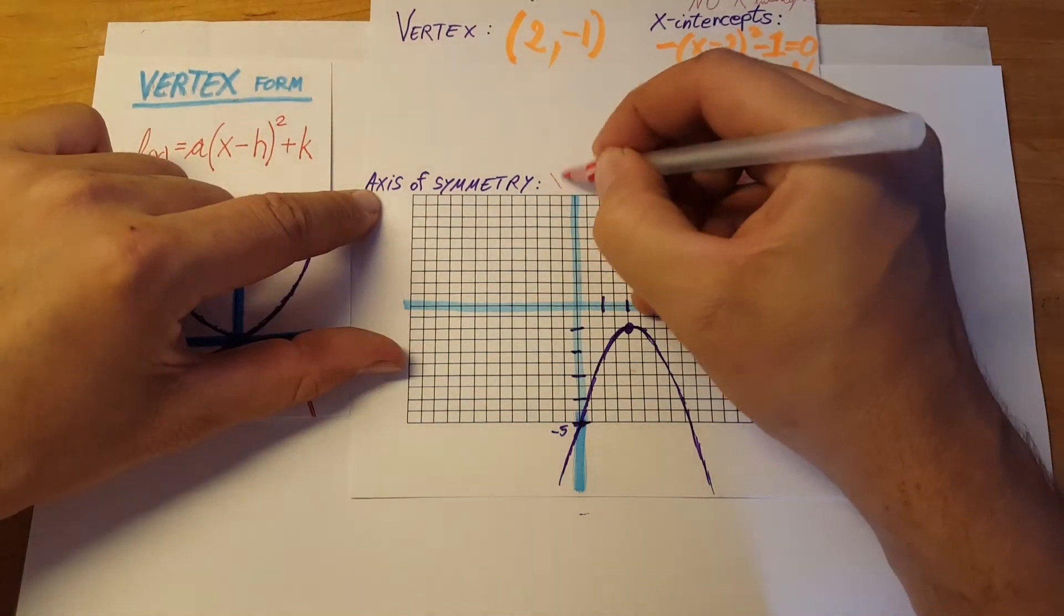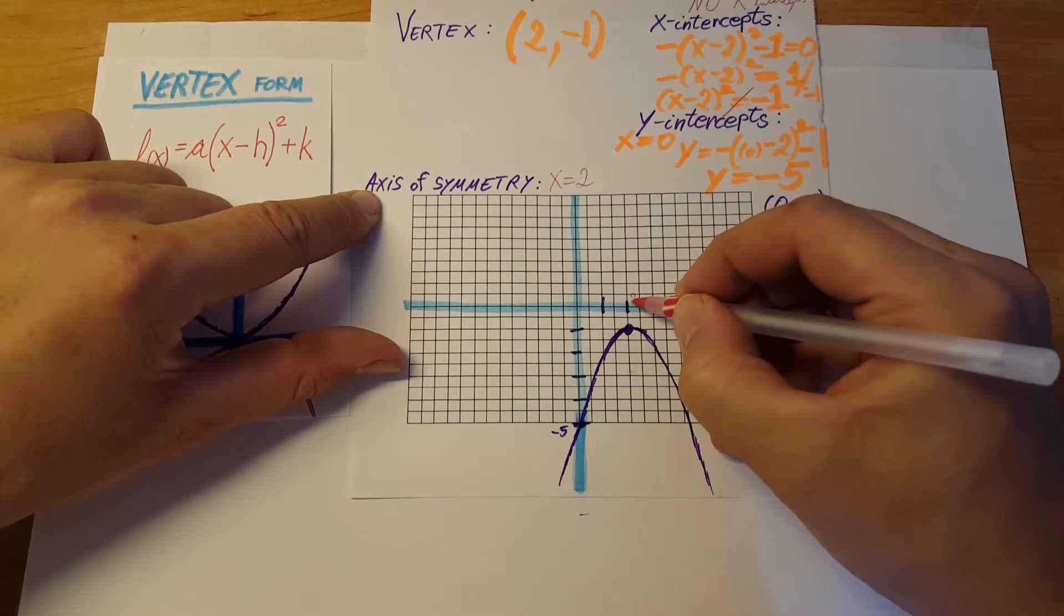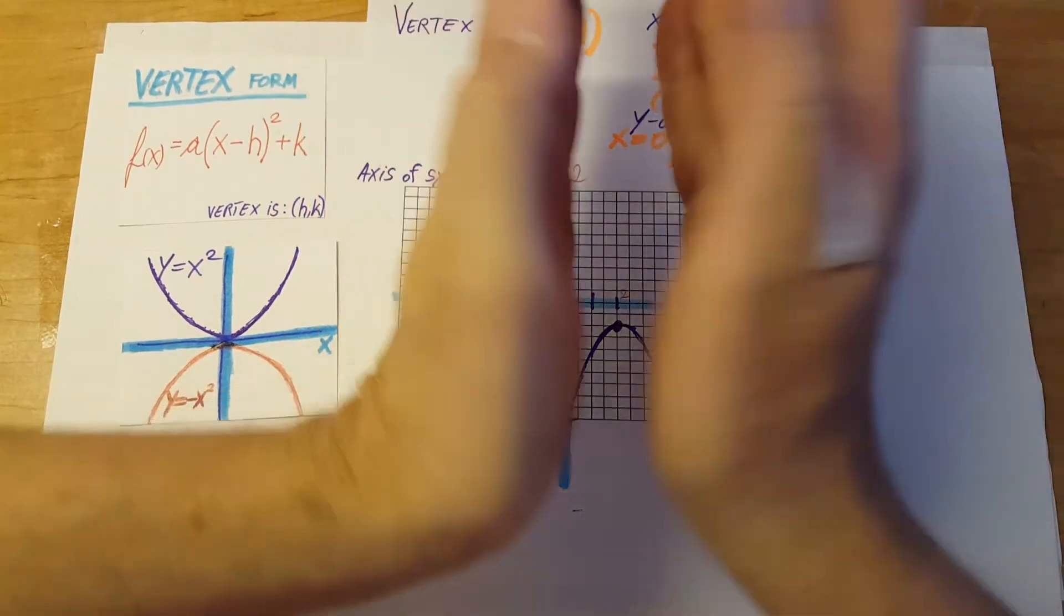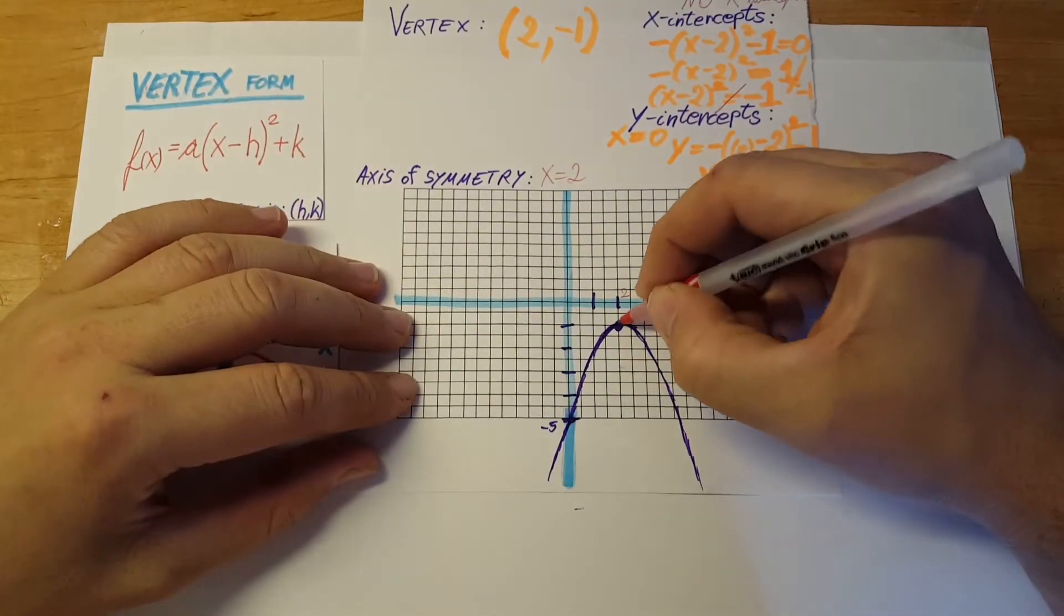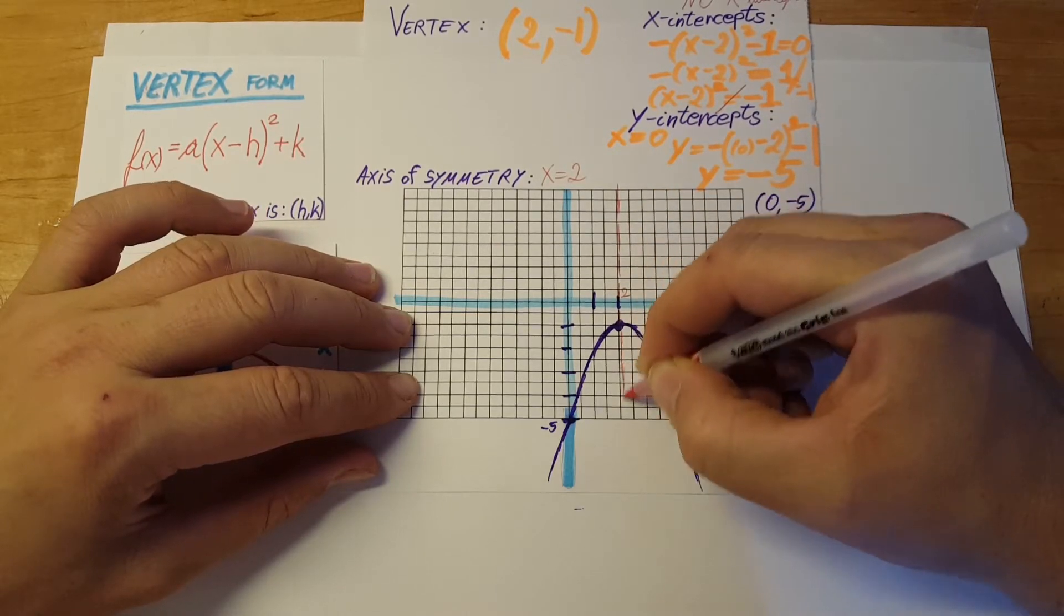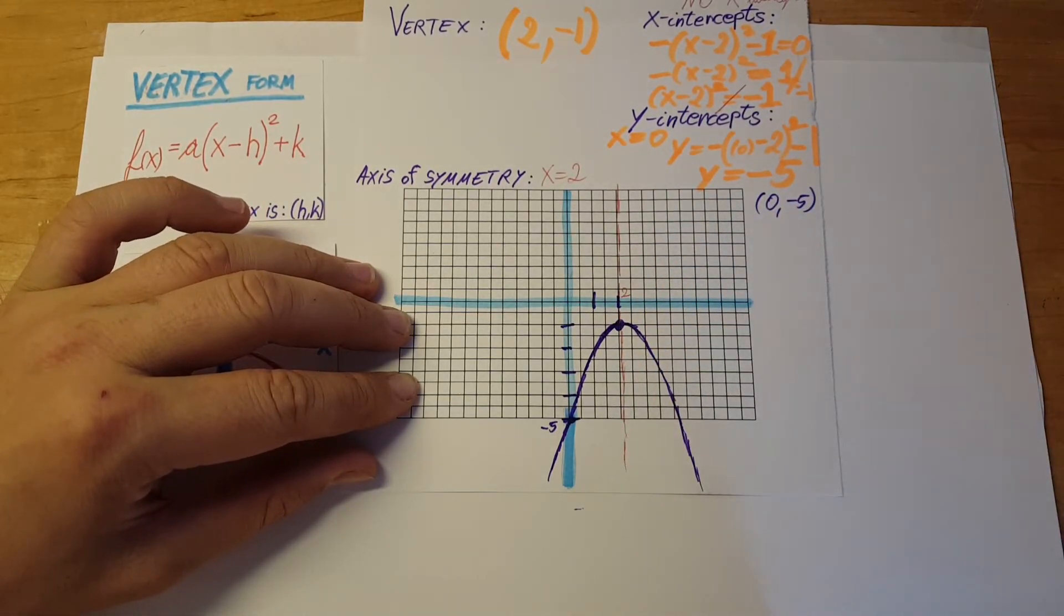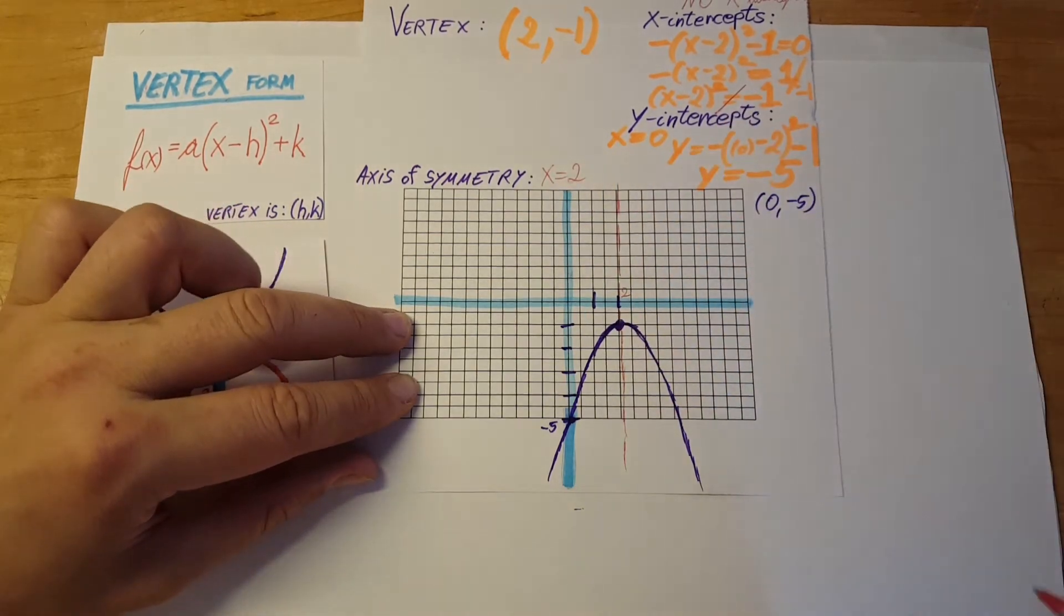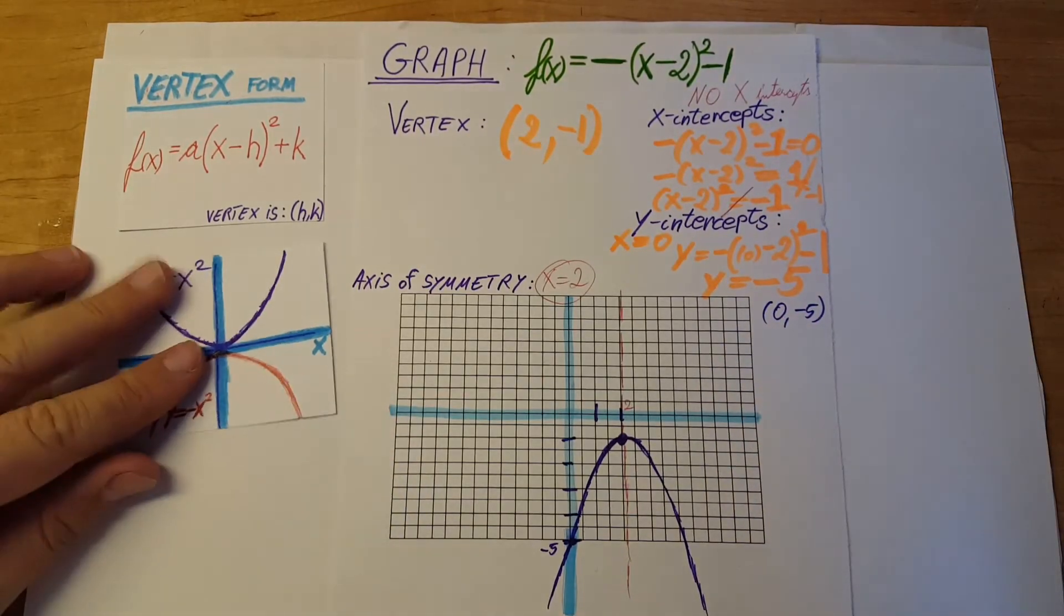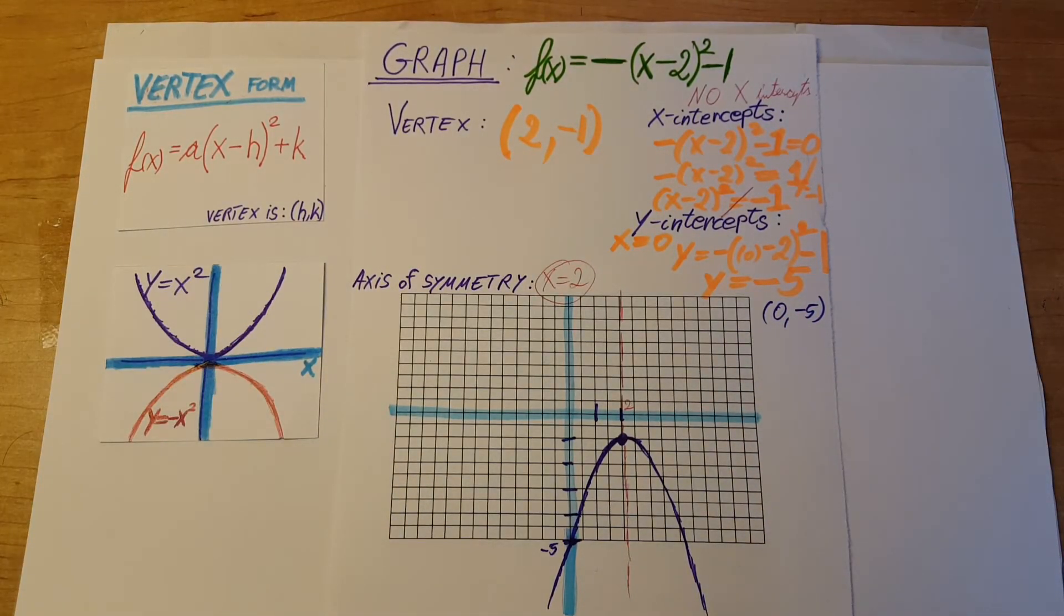The axis of symmetry is x = 2, right here, because this side of the parabola and this side of the parabola match each other. So this line here is our axis of symmetry, which is x = 2.